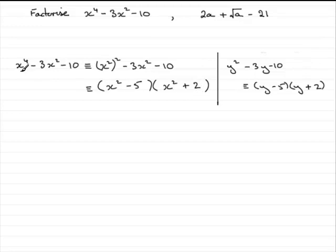So x to the power 4 minus 3x squared minus 10 can be factorised down to this. We often say that this is a quadratic expression in terms of x squared. A quadratic in x squared.